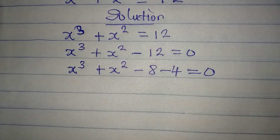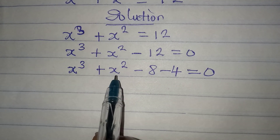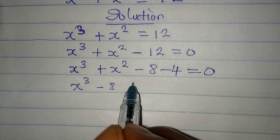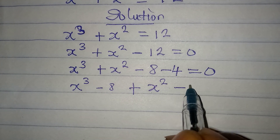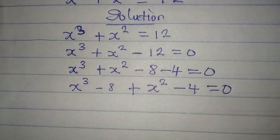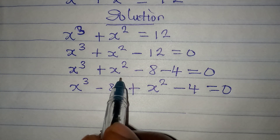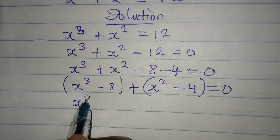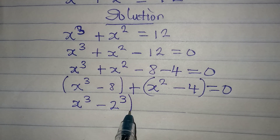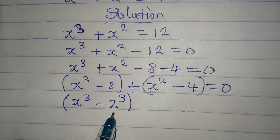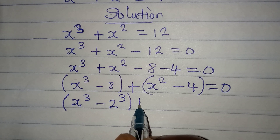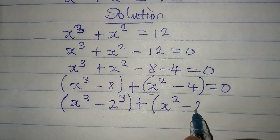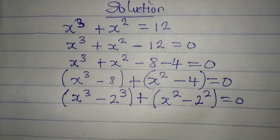Since I am relating these two parts, I bring them together: x to the power of 3 minus 8, then plus x squared minus 4, equal to 0. We group these two and deal with them. So the first bracket is x to the power of 3 minus 2 to the power of 3, since 8 is 2 cubed, and the second bracket is x to the power of 2 minus 2 to the power of 2, equal to 0.